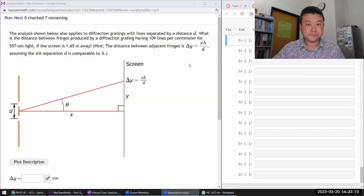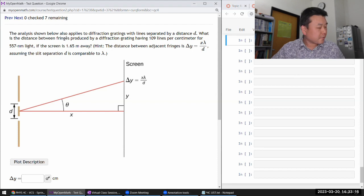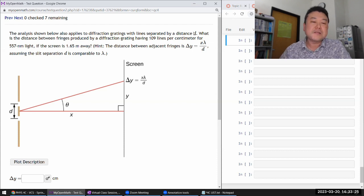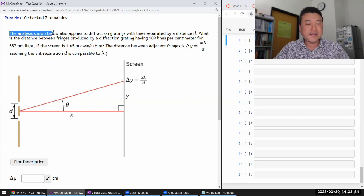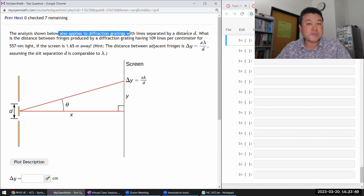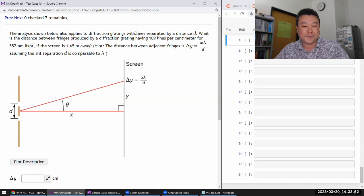The question states that the analysis shown below applies to diffraction gratings with lines separated by a distance d. What it means is that the analysis done for double-slit interference also applies to diffraction gratings with lines separated by distance d. That's what this question is reminding you - you can still use that.